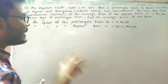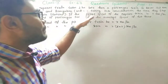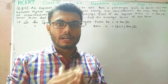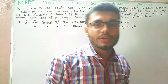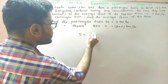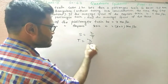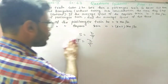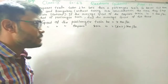It is given that the difference of their times is 1 hour. We have to find out what are the times taken by the two trains separately to cover the distance of 132 km. We know that speed equals distance by time, so time equals distance by speed. By using this formula, we have to find out the time taken by these two trains.